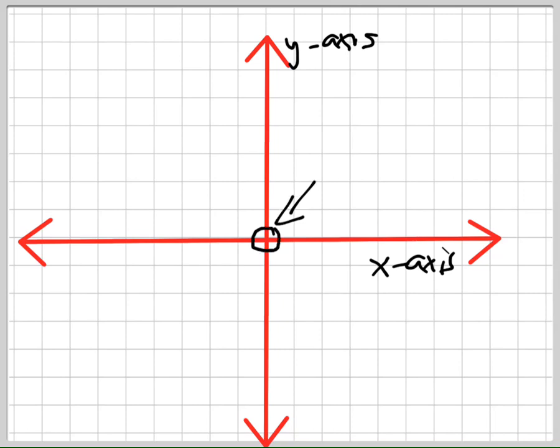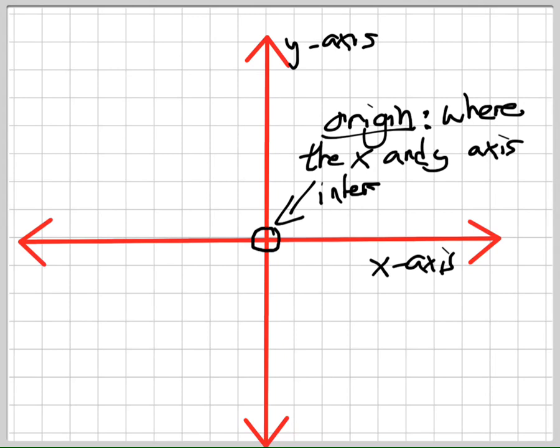What about this point right here? What do we call that? There's a specific name for it. This is called the origin. You don't have to draw the graph. I just care about the definition of origin. Origin is where the x and y-axis intersect, and it's at the point zero, zero. We got the x-axis that goes horizontal, the y-axis that goes vertical. The origin is where they intersect at the point zero, zero.